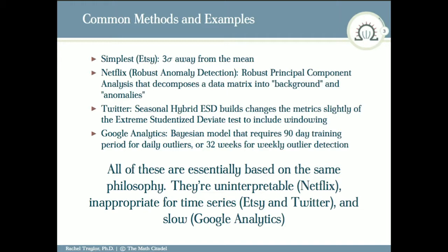Google Analytics picks up the Bayesian stuff. We all love Bayesian stuff. The problem with Google Analytics is that it requires a 90-day training period to look for daily outliers. You have to run this algorithm for 90 days consecutively before it has learned enough to start trying to hopefully flag outliers. If you want to look at weekly outlier detection, you need 32 weeks. You guys don't have that kind of time to train that stuff.